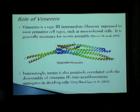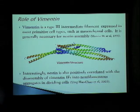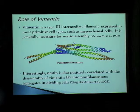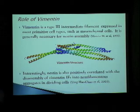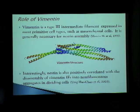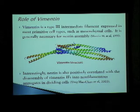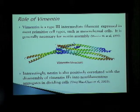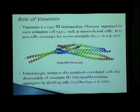Vimentin is another protein which is expressed in most primitive cell types. It's interesting because vimentin has been linked with nestin expression. It's been observed that vimentin is necessary for nestin assembly, and conversely, nestin is necessary for vimentin disassembly. So what this complicated mechanism seems to imply is that somehow nestin and vimentin expression is linked, and that is why we started observing for vimentin also in the third ventricle.